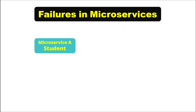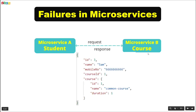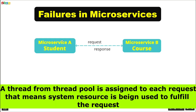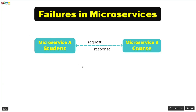In our case, we have a student microservice and a course microservice. We want student details including course details for that particular student through our API. So the student service needs to talk to the course microservice. If we are using Spring Boot, the student service has a servlet thread pool, and for each incoming request a thread will be assigned from the thread pool to serve the request. The thread will do request processing and once the response is sent back to the user, the thread will be freed. With this approach, we might face two kinds of failures.